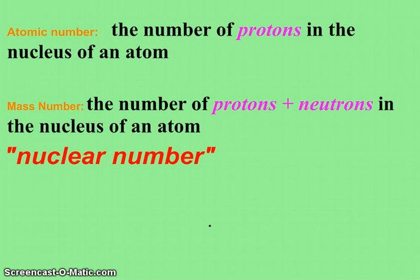Since the majority of the mass of the atom is in the nucleus, that's why the mass number describes the number of protons and neutrons.